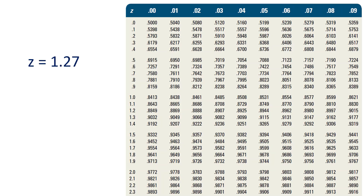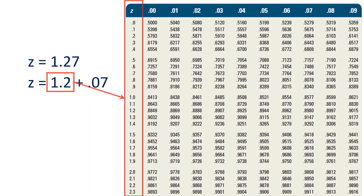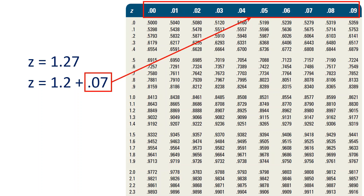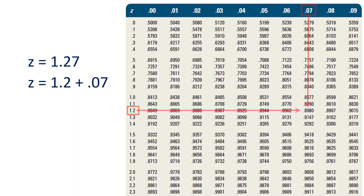If z equals 1.27, make it z equals 1.2 plus 0.07. This part containing the units and tenths is the row heading — the values in the first column. While this part containing the hundredths is the heading of the columns (0.00, 0.01, 0.02, up to 0.09). So the intersection of the 1.2 row and 0.07 column is 0.8980.